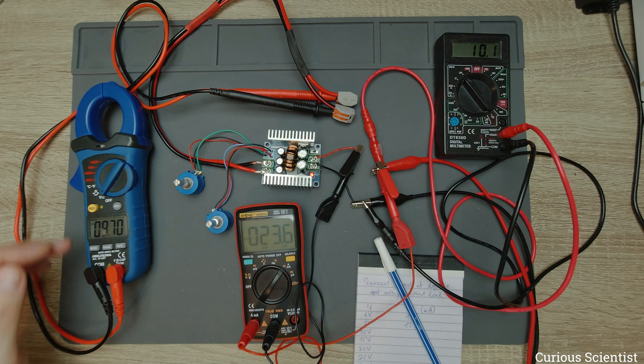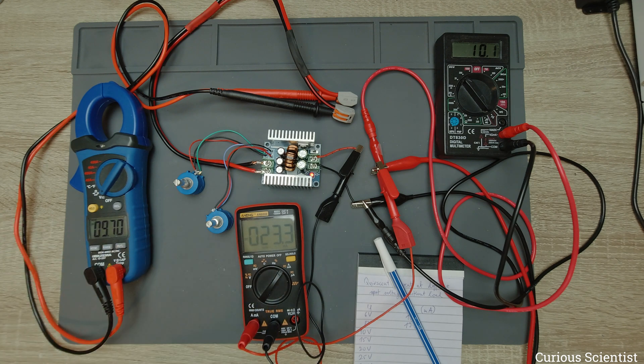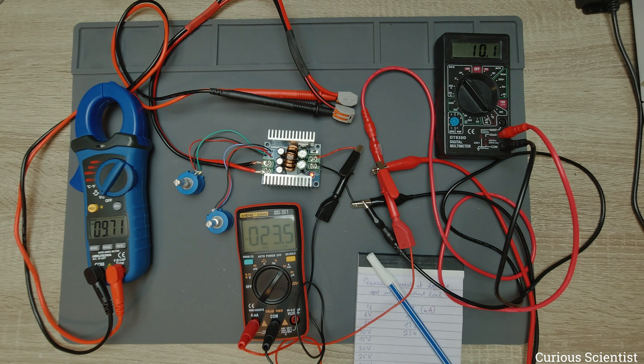We jump to 10 volts, and then 9.7 volts is registered on the output, and the current is 23.4 milliamps. Let's jump to 15 volts now.